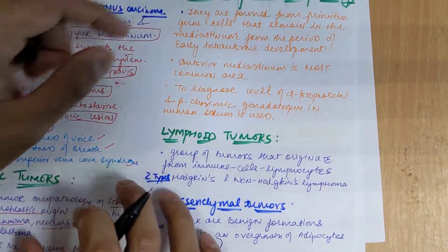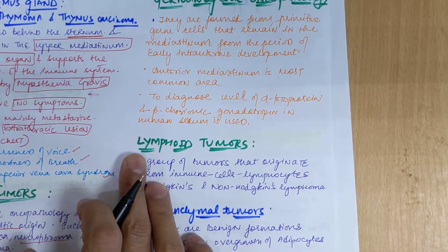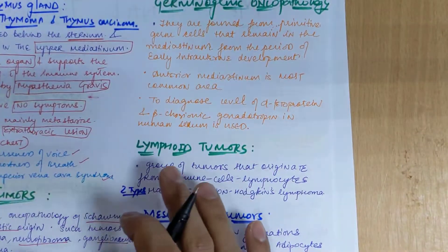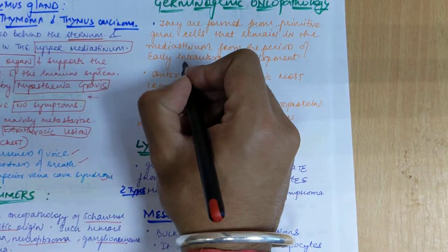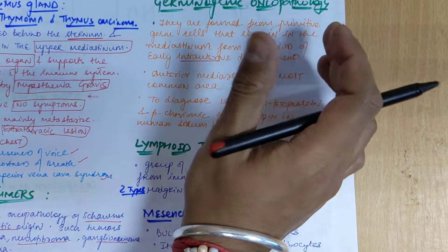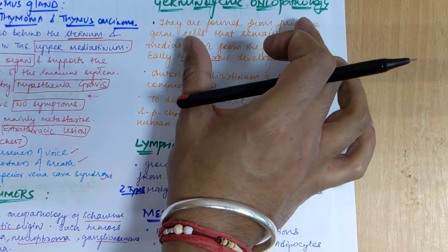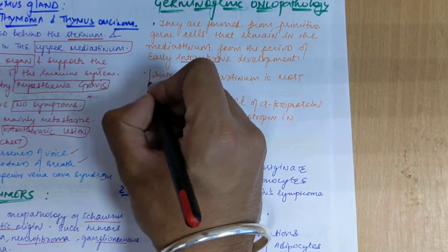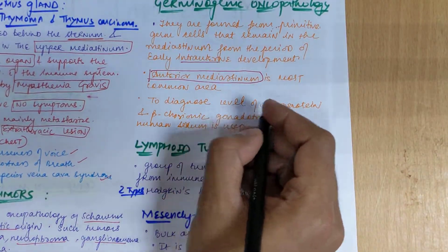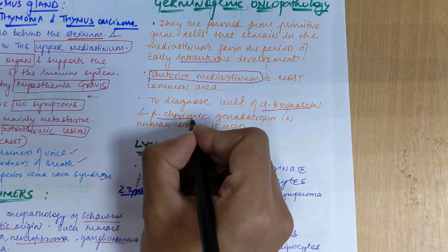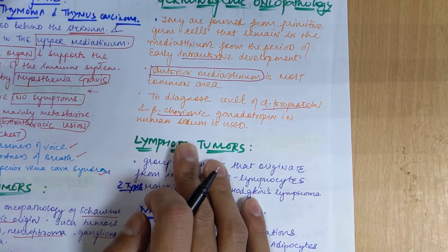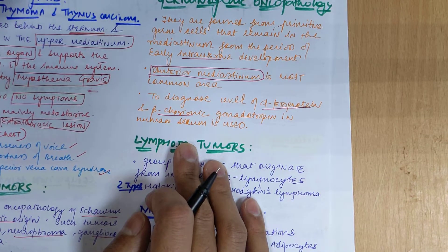Germinogenic oncopathologies are tumors originating from germ cells that remain in the mediastinum from the period of early intrauterine development. These germ cell tumors are most commonly present in the anterior mediastinum region in the lower compartment. To diagnose this type of tumor, we check alpha-fetoprotein and beta human chorionic gonadotropin levels in the serum.